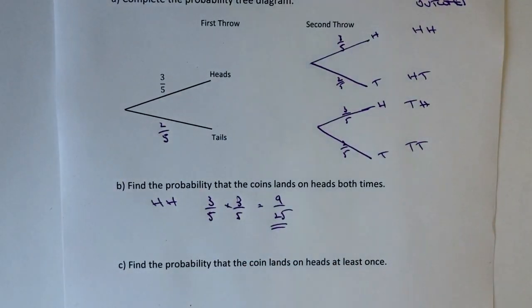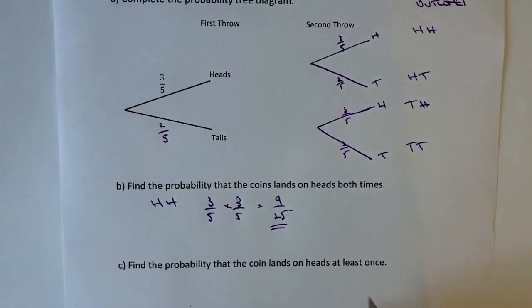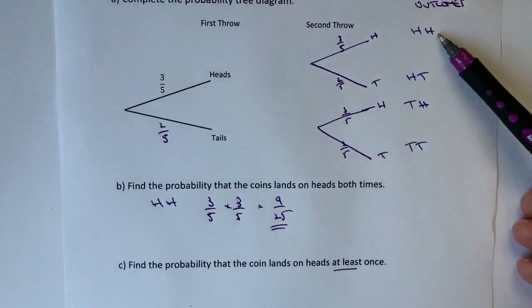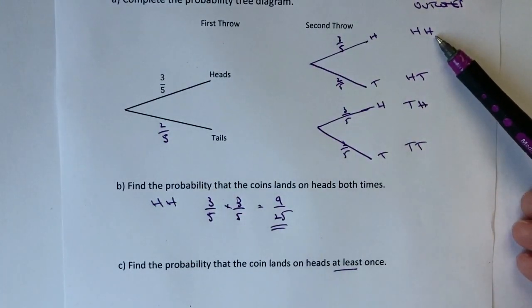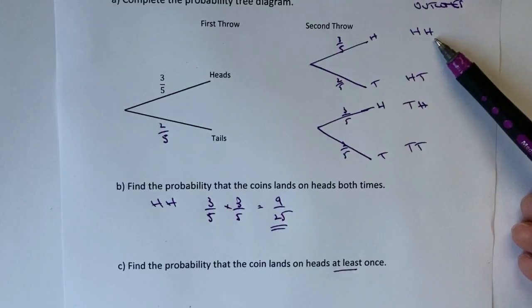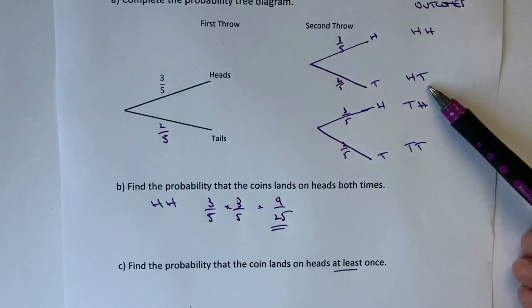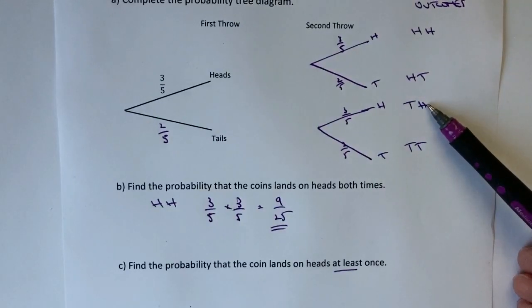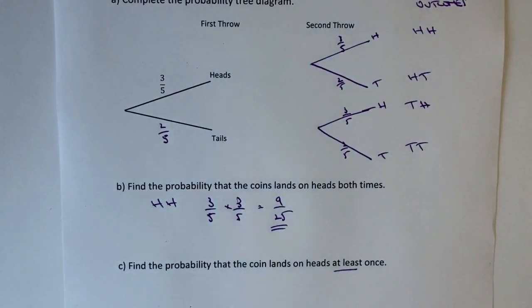Okay, part C of the question is find the probability that the coin lands on heads or tails and the key word here is at least once. So the probabilities that we're interested in are going to be the first one because that's at least once. It happens to be twice but it's at least once. We're also interested in that one and that one because this is heads and this is heads but we're not interested in the last one.